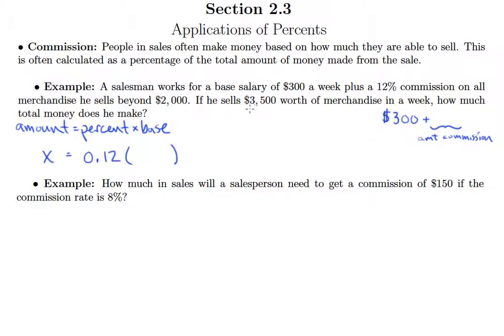So it says he sold $3,500 worth of merchandise. So what that means is that he doesn't get 12% commission on all of this. He's got to take away that first $2,000. And then that's what he earns 12% on. So for this person, the base is going to be $3,500 minus $2,000. So of course, that's $1,500. So only $1,500 gets to go in here.